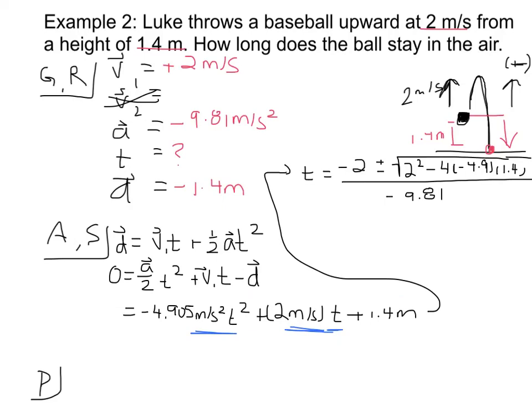And I end up with, for my square root, I have 2 squared. And then there's the 4 times 4.905 times 1.4. So we're adding that to our 2 squared. So I've got negative 2 plus or minus the square root of 31.468 over negative 9.81. And I take that square root, and it's 5.6. So we're going to take that to be 6 just to be consistent with our 2. We'll be consistent with our significant figures. So it's negative 2 plus or minus 6 divided by 9.81.